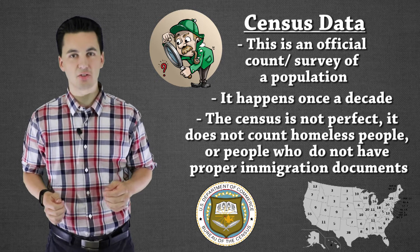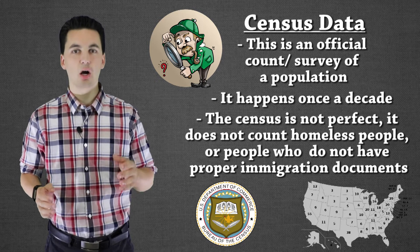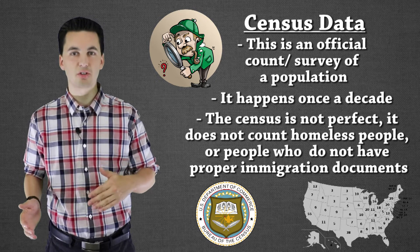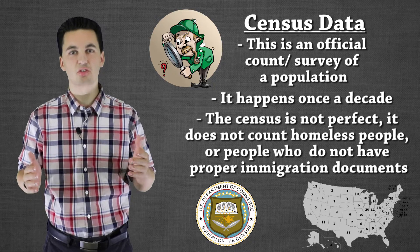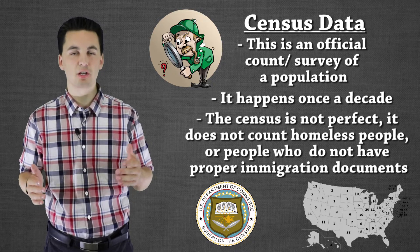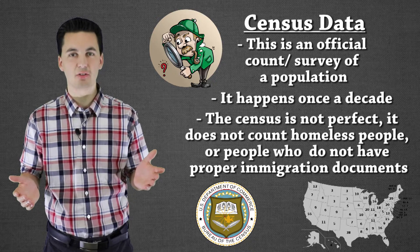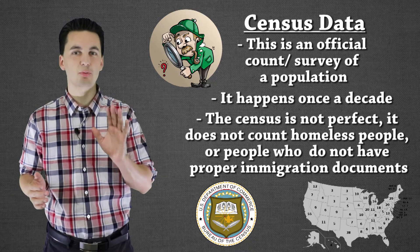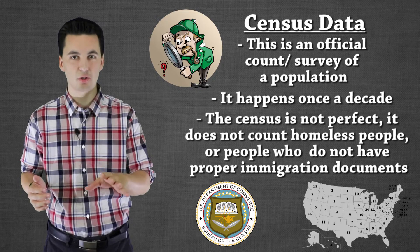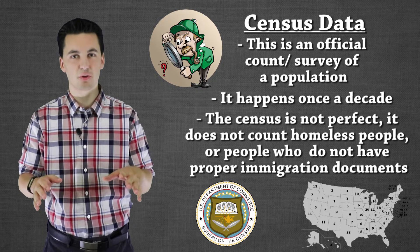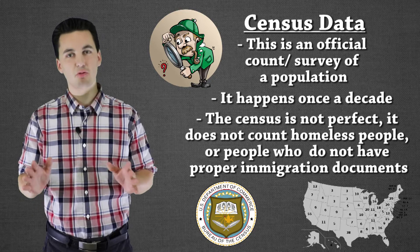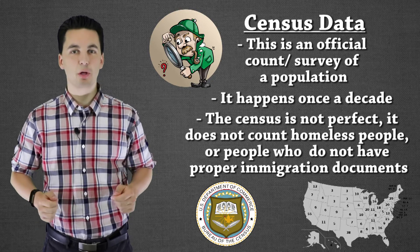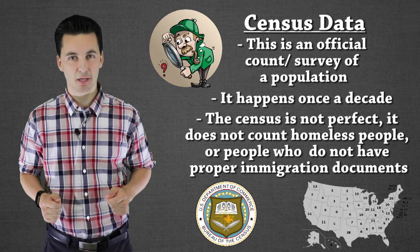For example, in the United States, our electoral college system is based off population sizes in certain counties and areas throughout the United States. We'll get into more of the electoral college, gerrymandering, and redistricting later on in the course, so you don't have to worry about that yet, but these things will be coming back.